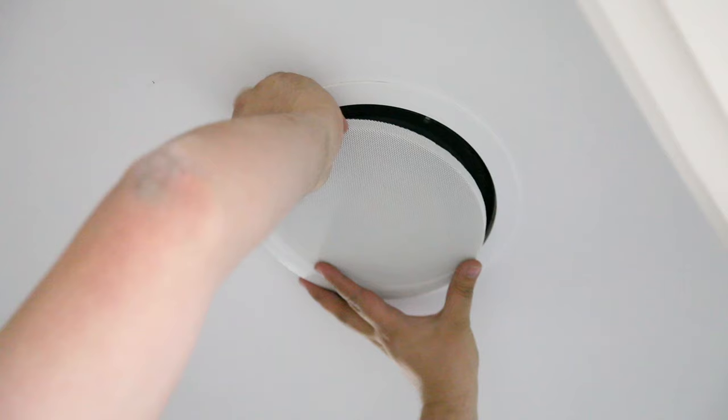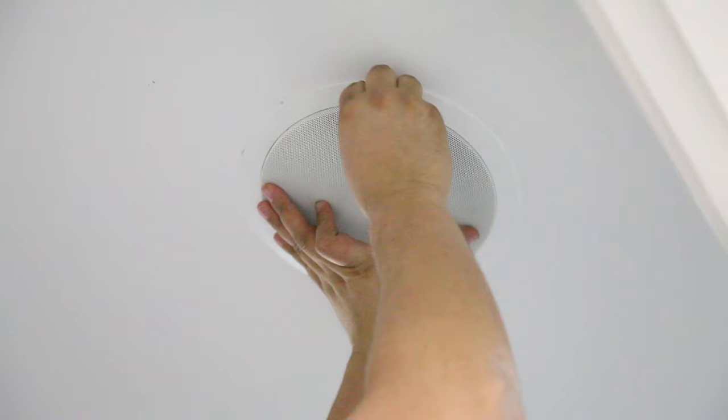And that's it. So I tilted the tweeter to the listening position where I sit on the lounge. And then I just applied the grill which comes with the speaker. And that sits in there nicely. And that's it. All done.